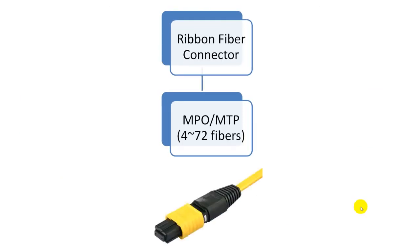Finally, there is one type of connector which holds from 4 to 72 fibers. It is called the MT connector, commercially available as MPO and MTP connectors. They have ferrules which can hold from 4 to 72 fibers. The main use is for pre-terminated cable assemblies, such as an MTP to SC connector fan-out assembly, which has one MTP connector on one side and multiple SC connectors on the other side of the cable assembly.